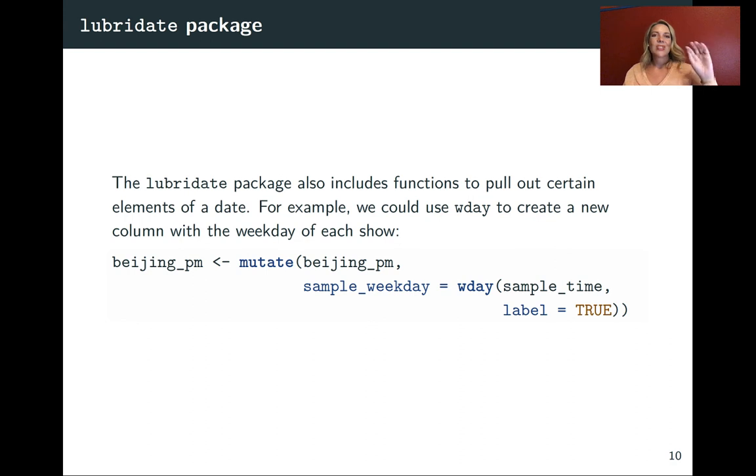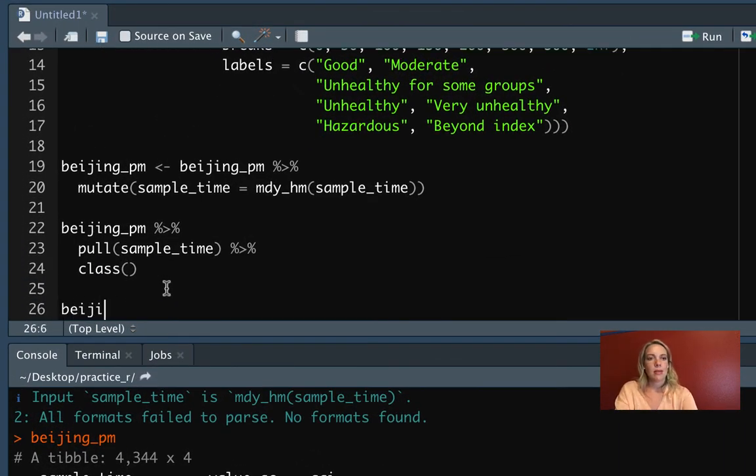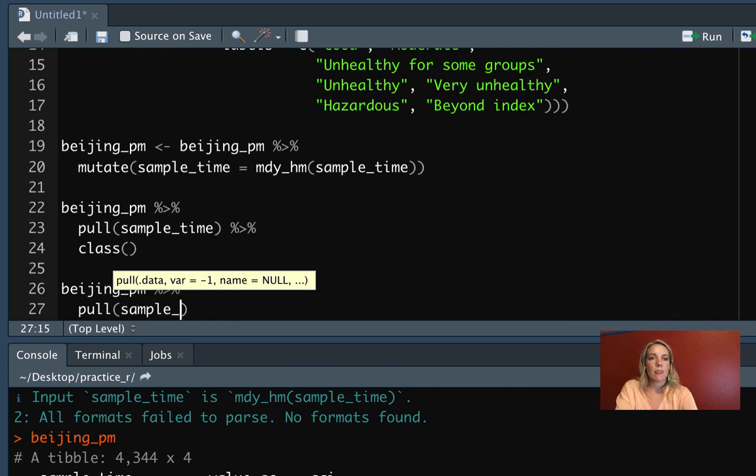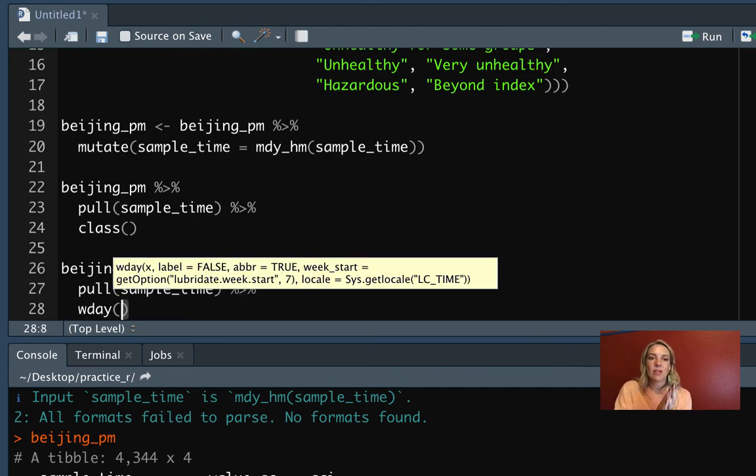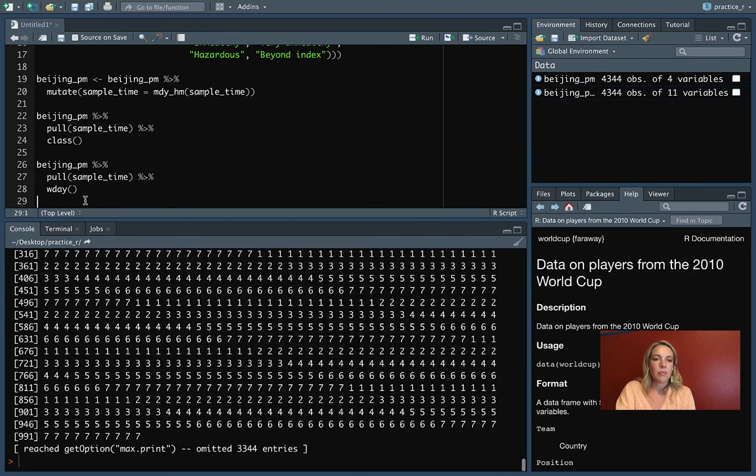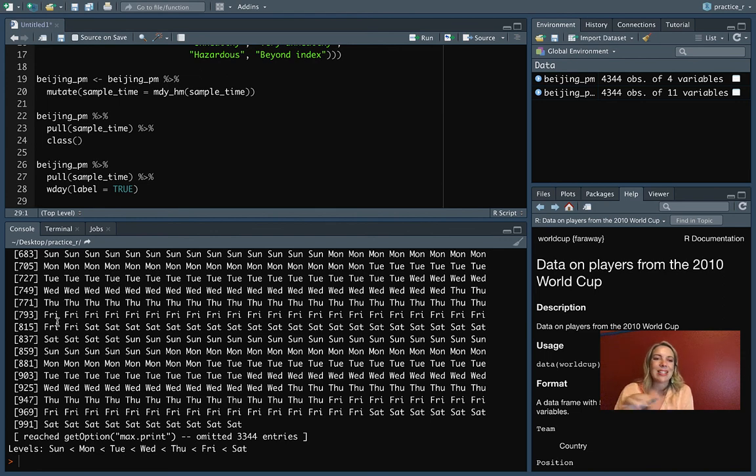The lubridate function also has some functions once you have something in a date time to pull out certain elements. You might have a date but you might be curious about what day of the week it is. This is something we use a lot in epidemiology for different air pollution and other ambient exposures, because it turns out that the rates of death and hospitalization can be different on the weekends versus the weekdays. So sometimes that's something we want to control for. We can take a look at that for this beijing_pm. I'll come down here, let's pull out just the sample time. We have that in that date time format now, so we can do the wday function on that. And if we do it just by default, that's giving us different numeric values, but there are also options like we can put in label equals true. And now if we run it, you can see that we've got like Monday, Tuesday, Wednesday, that's coming up very clearly.